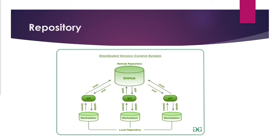We have a remote repository on a GitHub server and a local repository on each of our workstations. We can sync our code with the remote server by pushing the changes to the server, and we can also pull the code from that server. Now we are going to see how we can create a repository and how we can push and pull our changes.